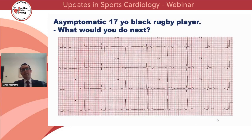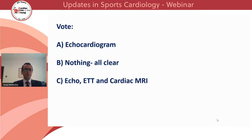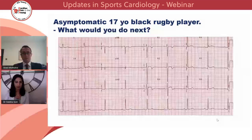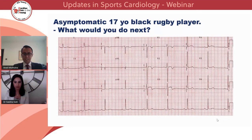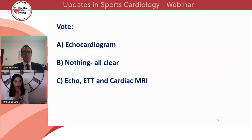I'd like to present this poll to the audience. This is an ECG of an asymptomatic 17-year-old black rugby player. My question to you is: what would you do next? An echocardiogram, nothing — all clear, or an echocardiogram, an ETT and a cardiac MRI? The options are: echo; nothing, all clear; or more comprehensive evaluation.